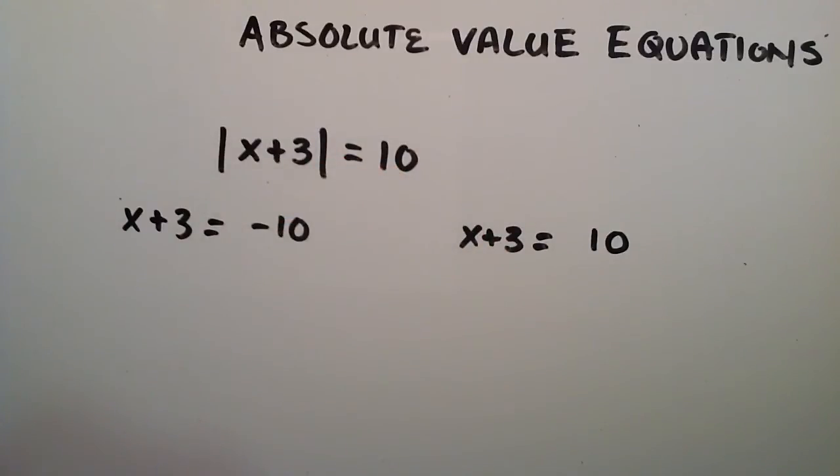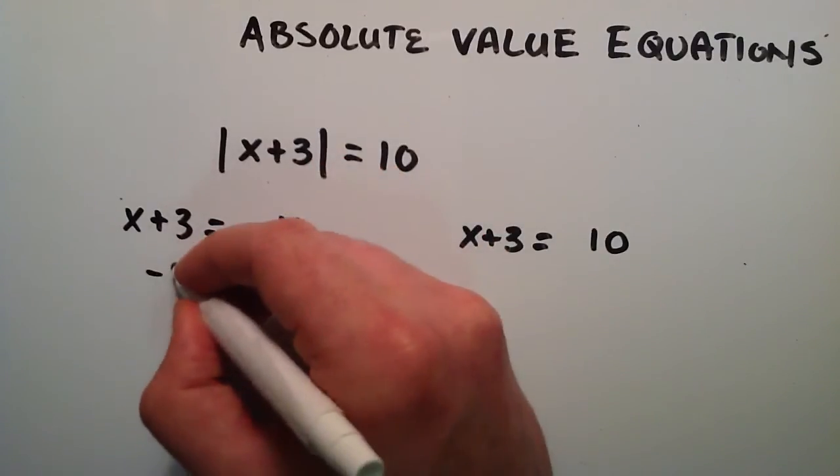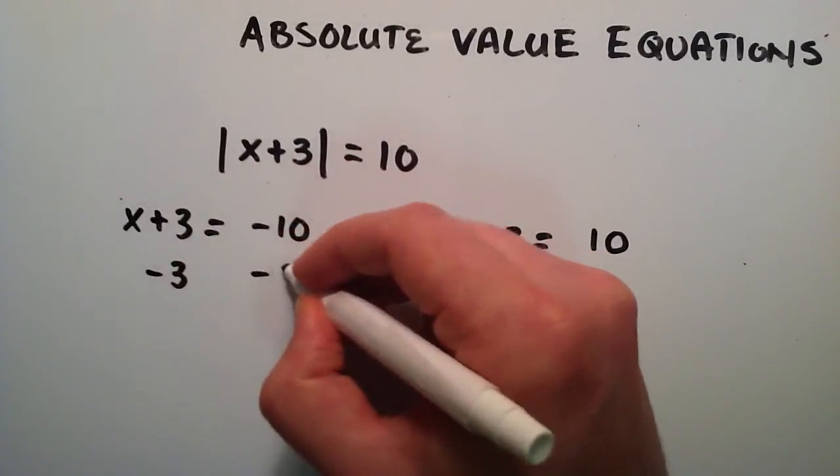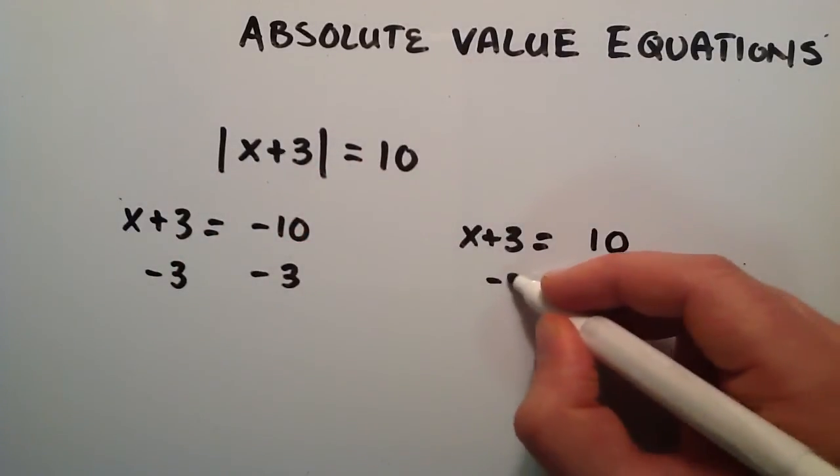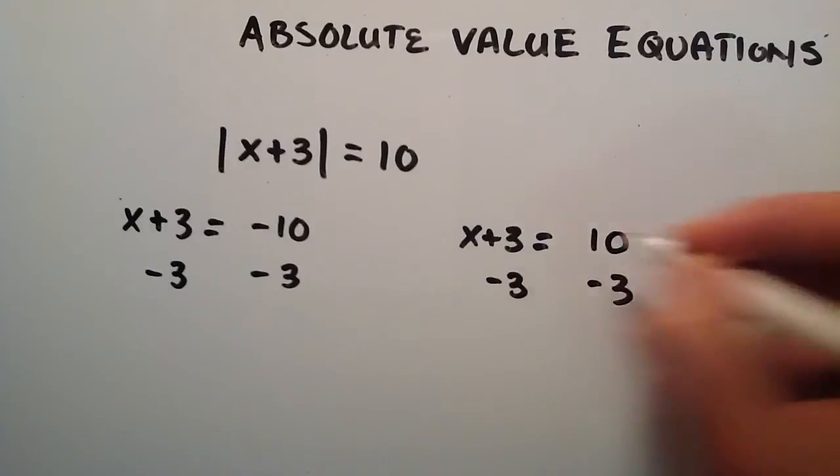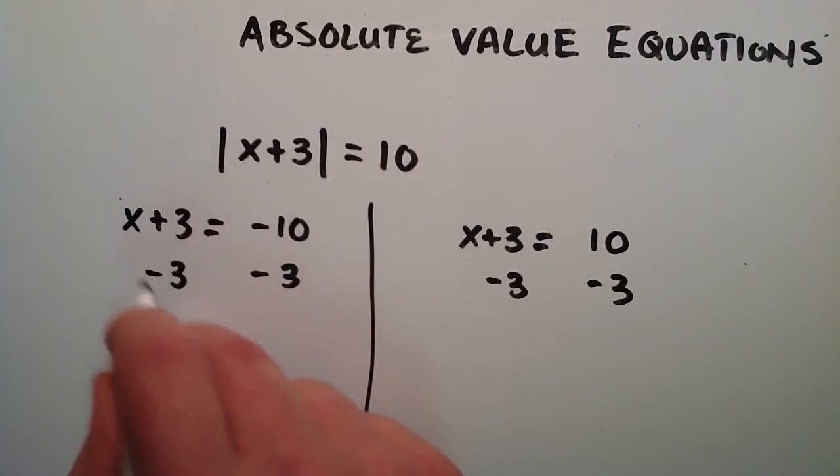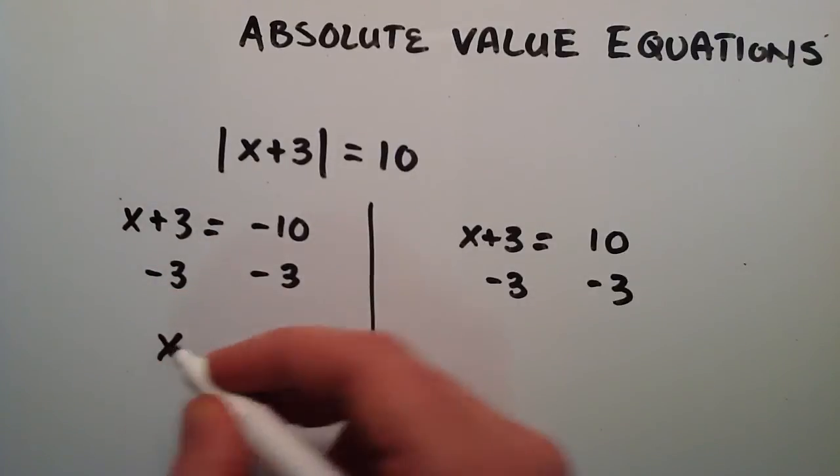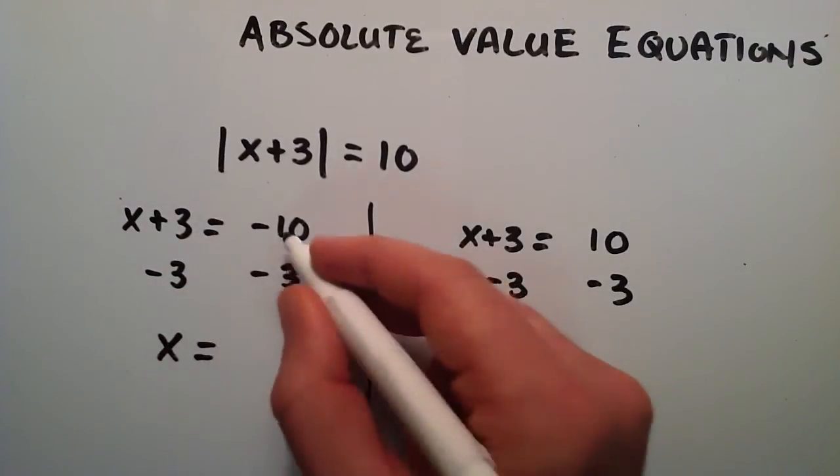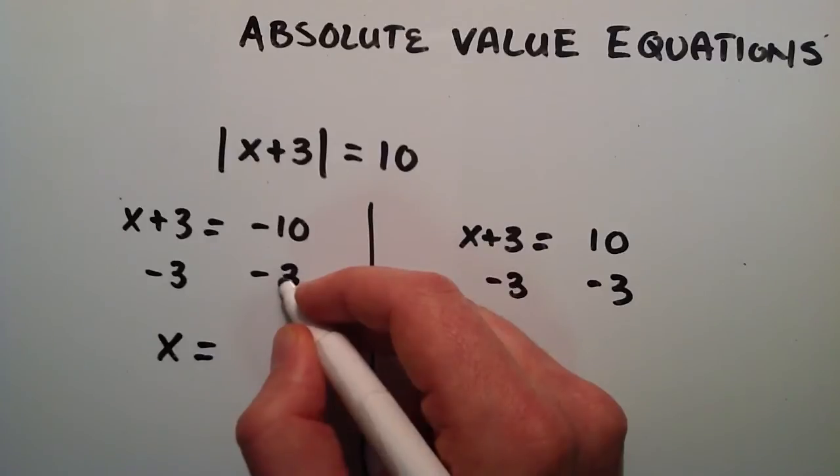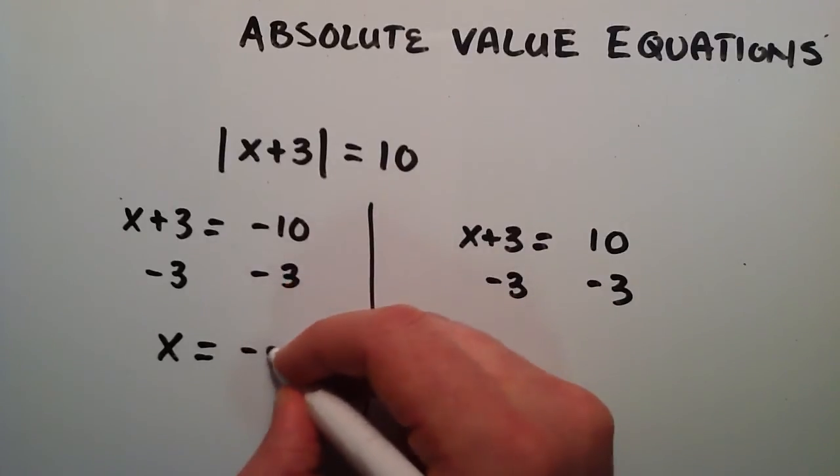Now we just have these two simple equations to solve. We're just going to subtract three on each side of each equation here. So subtracting three, and basically, a positive three and a negative three give us zero, so we're just left with x on the left hand side here. And that's equal to negative 10 minus three, and that's going to give us a negative 13.